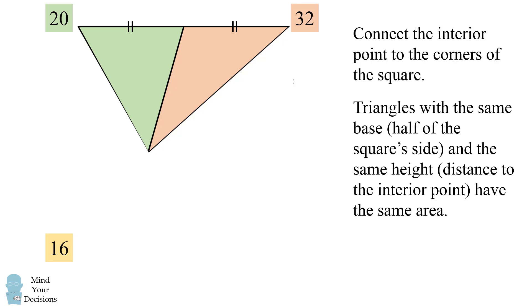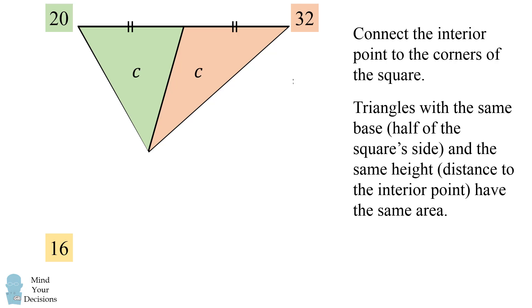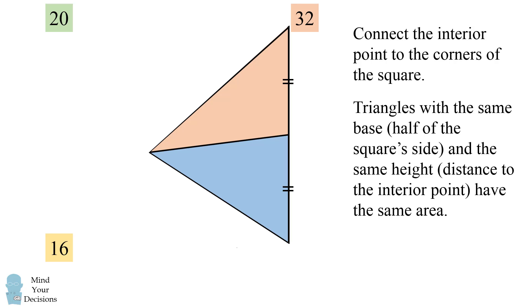We'll do the same thing for this side of the square. These two triangles will have the same area, and I'll denote it by the letter C. Now we continue to the fourth side of the square, and these two triangles will have the same area, and I'll denote this area by the letter D.